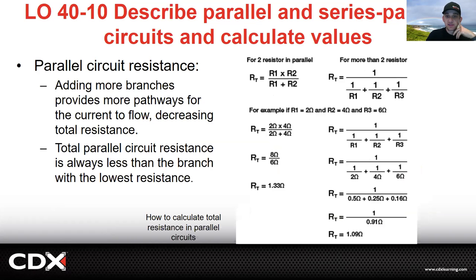Parallel circuit resistance. If you guys go into CDX in that learning module, there's a good image right there that has this broken down for you guys. I know this looks really intimidating or really confusing, but if you just break it down a little bit, it's not that bad. It's just scary to look at at first. So adding more branches provides more pathways for the current to flow, which decreases the total resistance. If you've got a bunch of resistance in the circuit and you add different branches for it to go down, it's obviously going to drop the resistance. Total parallel circuit resistance is always less than the branch with the lowest resistance.